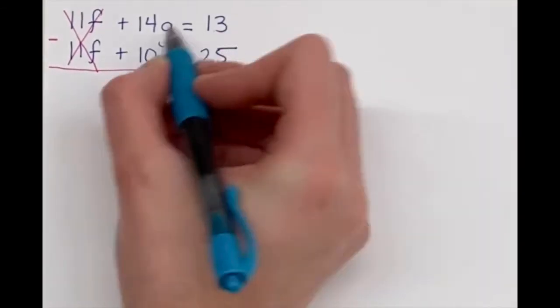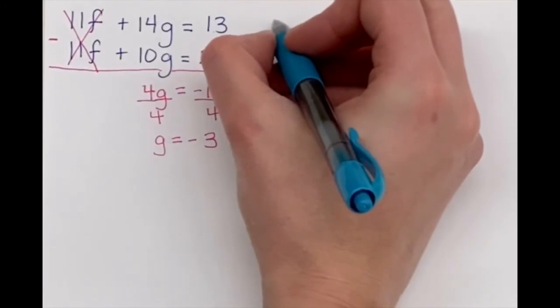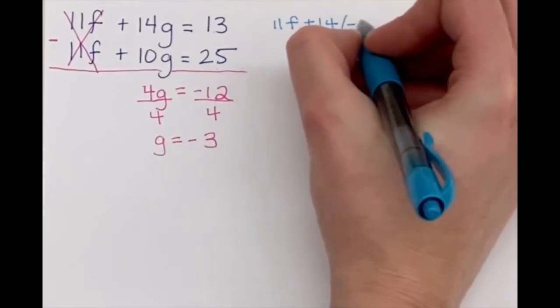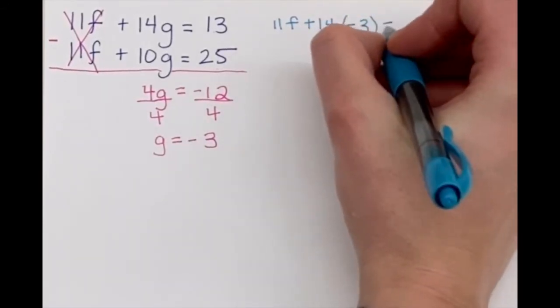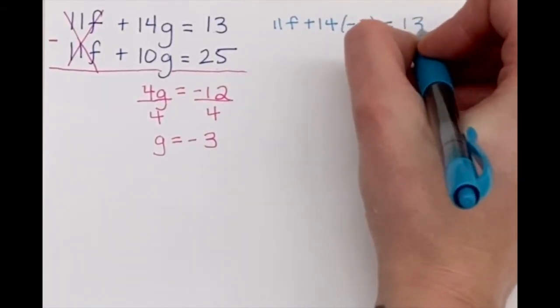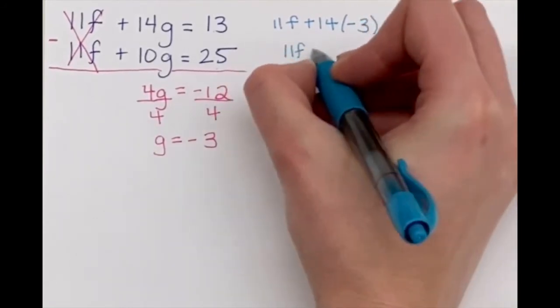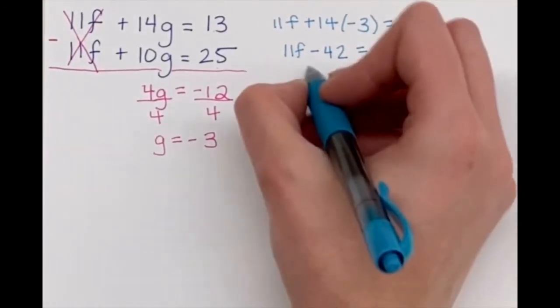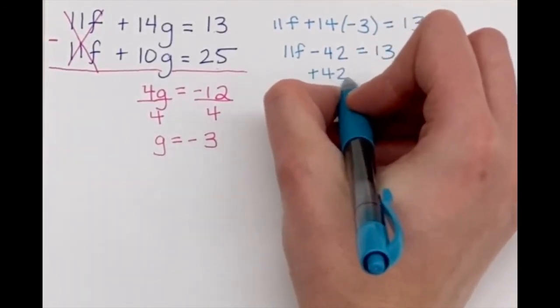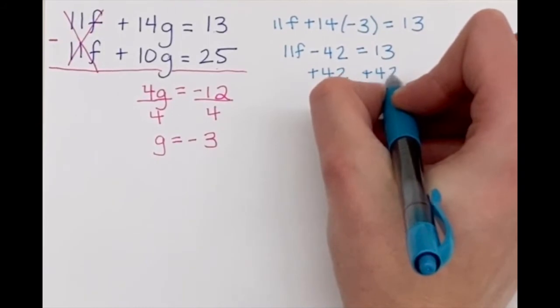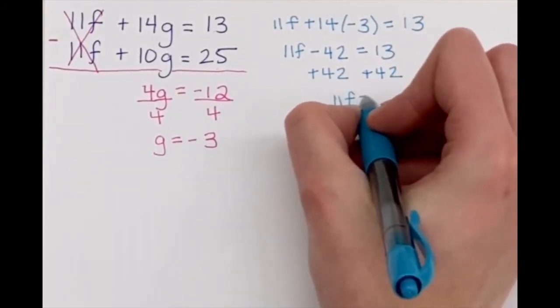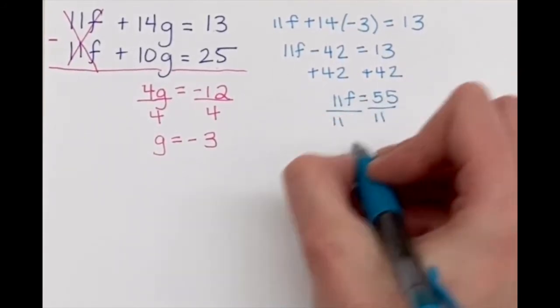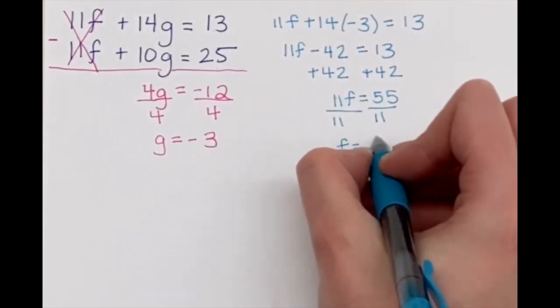So we're going to have 11 f plus 14 times negative 3 equals 13. 11 f minus 42 equals 13. Add 42 to both sides. 11 f equals 55. Divide both sides by 11. And f is going to equal 5.